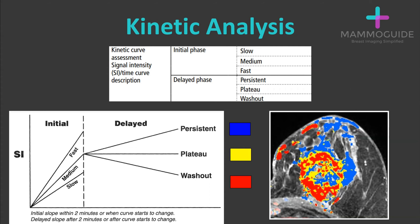Many times, computer automated detection is used and a color map is applied to the breast. Persistent enhancement may be blue, plateau enhancement could be yellow or green, and washout enhancement is typically red. This makes it easy to describe which category the lesion falls into.